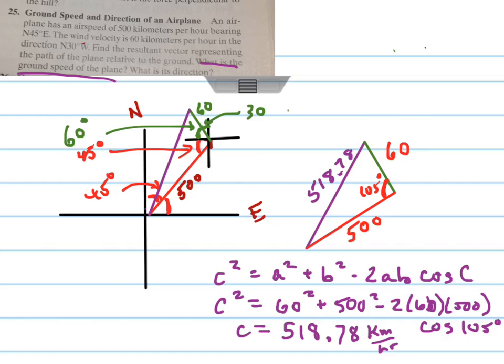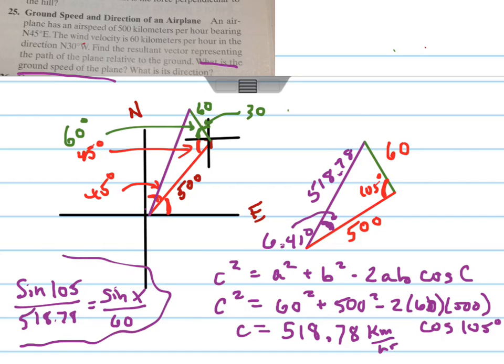And then we can find this angle right here by now using the law of sines. And we get 6.41 degrees. You can see that work down there in the corner. And remember that's this angle right here. And so we want to write that in the form that you've seen in the problem up here. So that would be north 38.59 east.